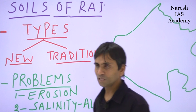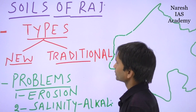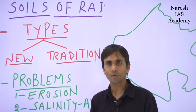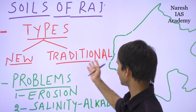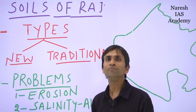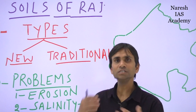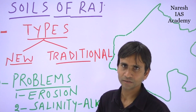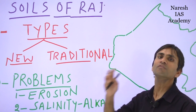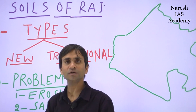Classification of soils in Rajasthan, as well as in India, uses two methods. One is the conventional or traditional classification, and the second is the new classification according to an international organization of which India is also a party. That is why India has adopted this, and being a part of India, Rajasthan also follows the new classification of soils.